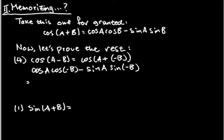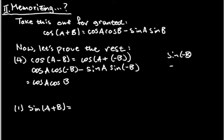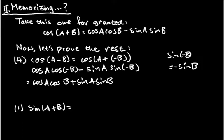Cosine of negative b equals cosine of b, so we get cosine(a) times cosine(b). Sine of negative b equals negative sine(b) because sine is an odd function and cosine is an even function. So that negative multiplies with the minus sign in front, giving us plus sine(a) times sine(b). And this is the fourth identity: cos(a − b) = cos(a)cos(b) + sin(a)sin(b).